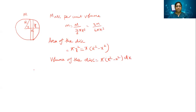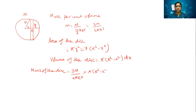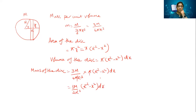Now, the mass of this tiny disk. Mass of the disk is equal to ρ times the volume, which is (3m / 4πr³) × π(r² − x²) dx. The π cancels, so we get mass of the disk = (3m / 4r³)(r² − x²) dx. This is the mass of the disk.